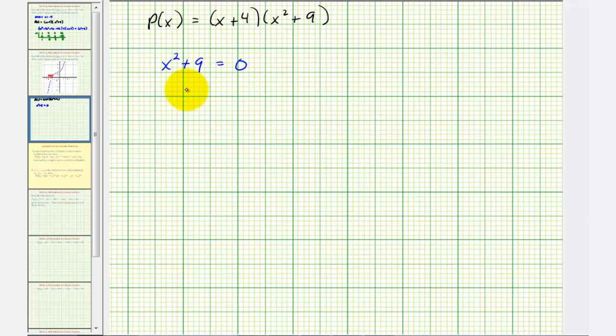We would subtract 9 on both sides, and then take the square root of both sides to solve for x. Don't forget the plus or minus here to get our two solutions. So we have x equals plus or minus the square root of -9, which would be √(-1 × 9). So this is an imaginary number: the square root of -1 is i, the square root of 9 is 3. So we have x = ±3i.